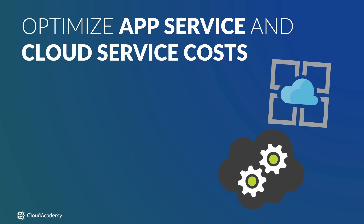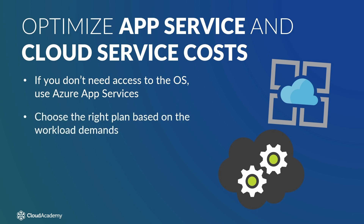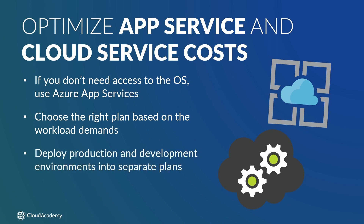Reducing application deployment costs begins with determining whether your specific deployment requires access to the operating system. If so, Azure Cloud Services provides that level of access. Otherwise, the preferred method is by using Azure App Services. With either service offering, it's important to choose the right plan based on the demands of the workload deployed. Also, deploy all of your production web apps into a single plan and deploy your development environment into another plan. In many cases, the production and development deployments are best deployed in separate Azure accounts, and then you can delete the development resources when no longer needed.